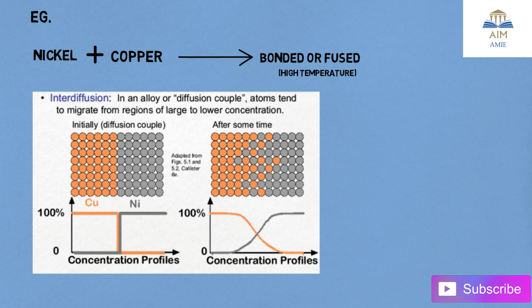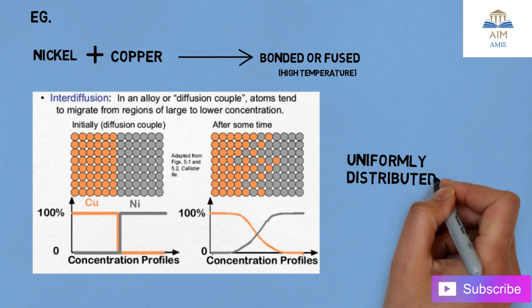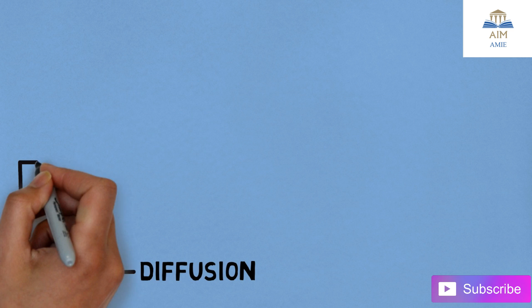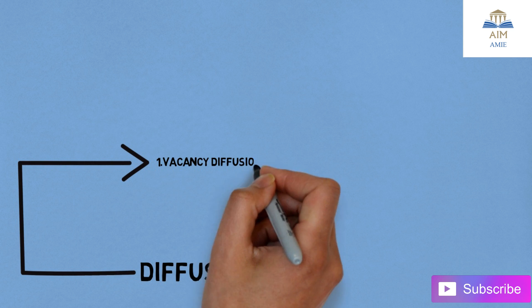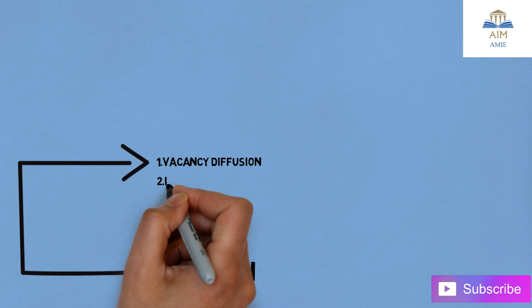There are several types of diffusion and atomic movements. The first one is vacancy diffusion and the second one is interstitial diffusion.